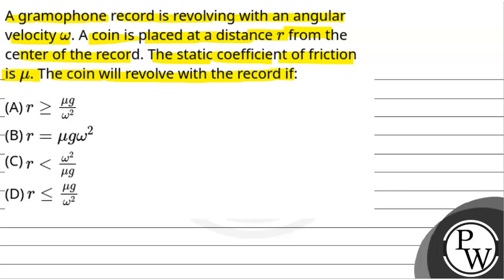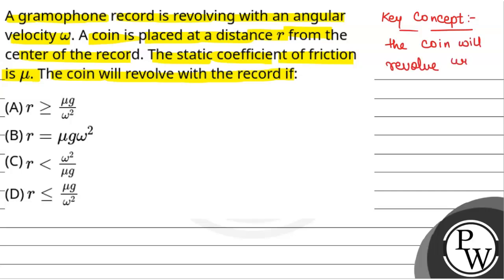We will solve this question. First of all, we will see what will be the key concept used to solve this question. The key concept is that the coin will revolve with the record if the force of friction is greater than or equal to the centrifugal force.